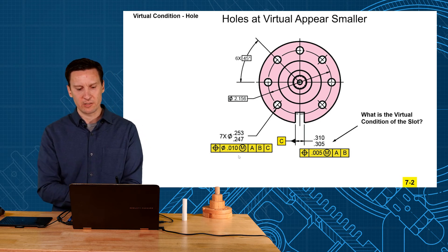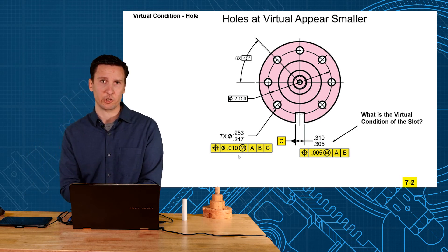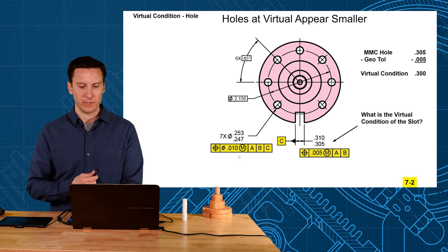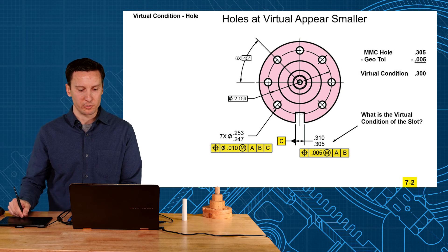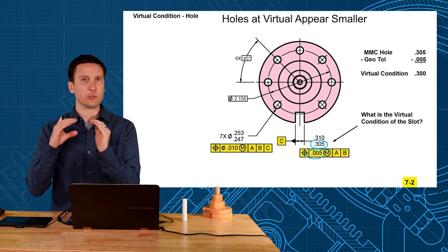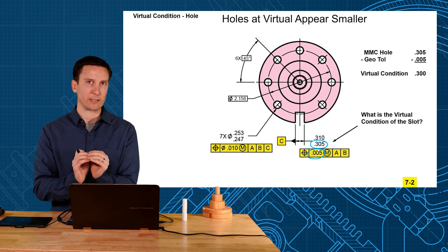Let's give you more practice here. Let's look at that slot. What would be the virtual condition of that slot? Super easy, right? 300. Because all you do is you take your smallest hole, 305, and subtract out the geometric tolerance. And it's like a hole. It's a slot. But it's a hole. It's an internal feature. So you take your smallest hole, subtract out that geometric tolerance.